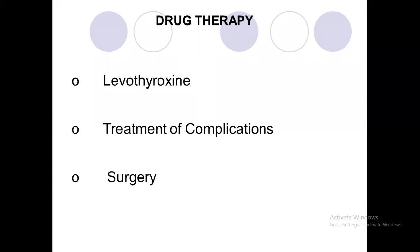Levothyroxine is the treatment of choice — it is a widely available, very cheap drug that should be given throughout the whole life. The starting dose is 50 micrograms daily, taken early morning on an empty stomach. This is very important — food hinders absorption, so the drug must be taken at least 30 to 60 minutes before breakfast for proper absorption.